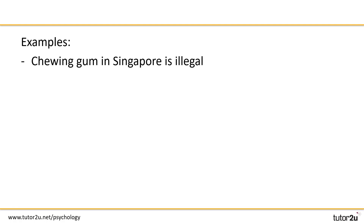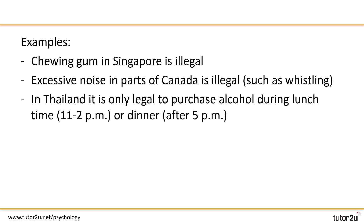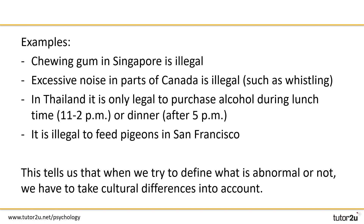Here are just a few examples — I'm sure you found some to add. Chewing gum in Singapore is illegal; excessive noise in parts of Canada is illegal; in Thailand it's only legal to purchase alcohol during lunch or dinner time; and it's illegal to feed pigeons in San Francisco. The conclusion is that when we try to define what is abnormal, we have to take cultural differences into account.